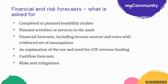The next part is financial risks and forecasts — this is the area of the management case that most people struggle with. What is asked for includes completed or planned feasibility studies, going back to basics about planned activities or services you'll deliver in the asset, financial forecasts including income sources and costs with an evidenced set of assumptions, an explanation of the use and need for community ownership revenue funding, three years of cash flow forecasts, and coverage of risks and mitigations.